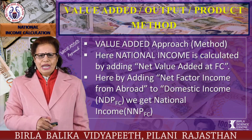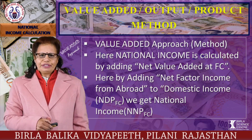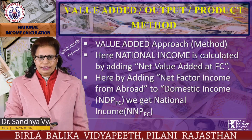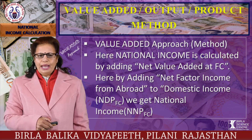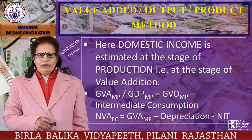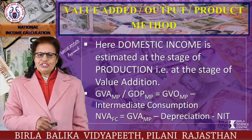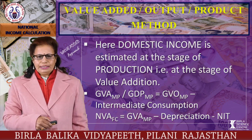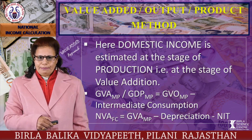In the value-added approach, national income is calculated by adding net value added at factor cost. By adding net factor income from abroad to domestic income (net domestic factor income at factor cost), we get national income — the formula being NNP at factor cost. Domestic income is estimated at the stage of production, i.e., at the stage of value addition. GVA at market price, or GDP at market price, equals GVO at market price minus intermediate consumption. NVA (net value added) at factor cost equals gross value added at market price minus depreciation minus NIT (net indirect taxes).